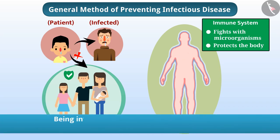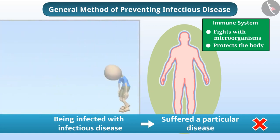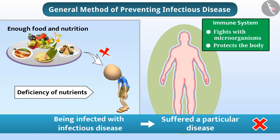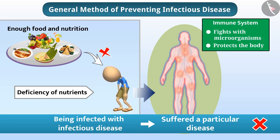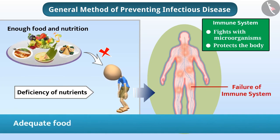Therefore, being infected with an infectious disease does not mean that we have suffered a particular disease. But if one does not get enough food and nutrition, there is a deficiency of nutrients in the body, due to which the immune system does not succeed in killing disease-causing microorganisms. Severe disease indicates failure of the immune system. That's why adequate food is the basic need to prevent infectious diseases.